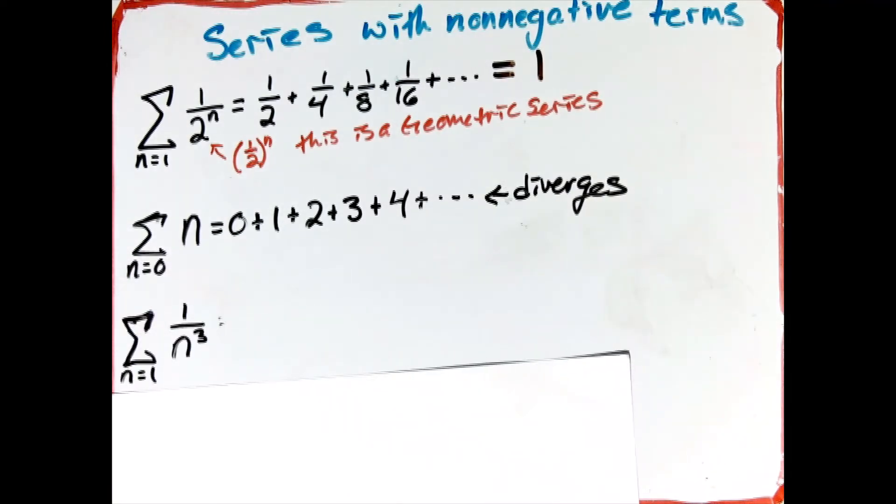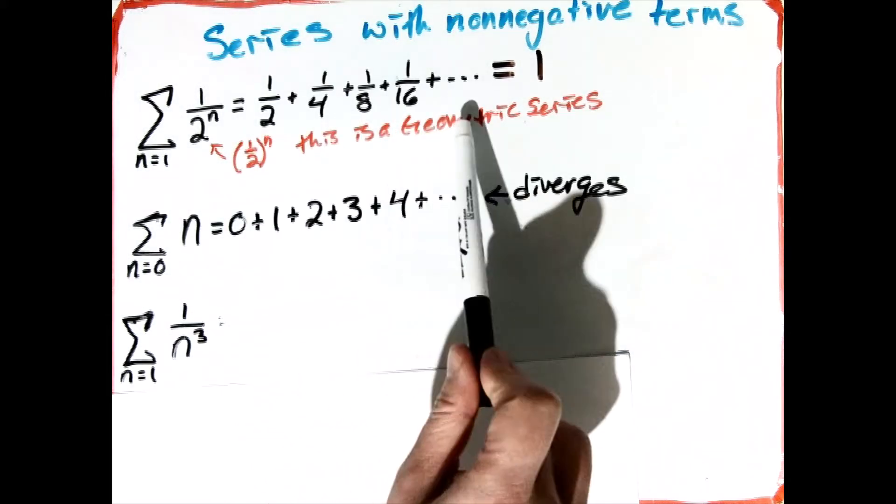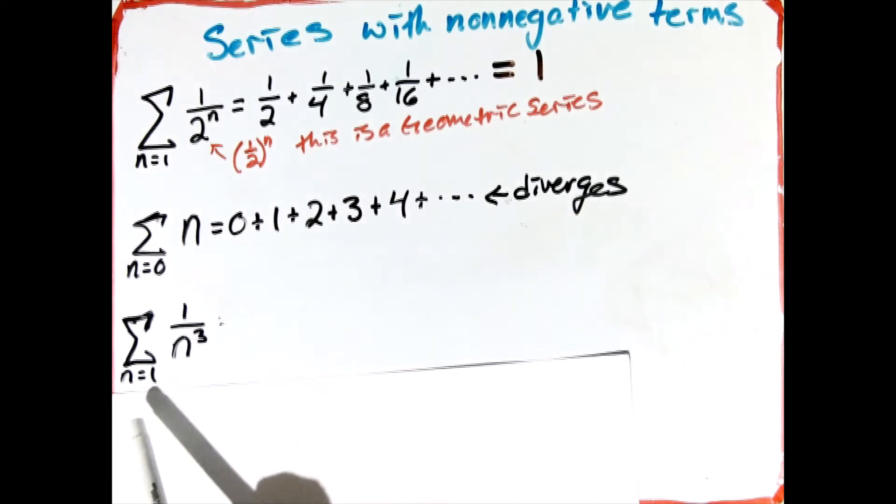The next example we have, now notice this looks similar to the geometric series in that I've got something to a power, but here the base is changing and the power is staying the same, as opposed to our geometric series where the power was changing and the base was staying the same.